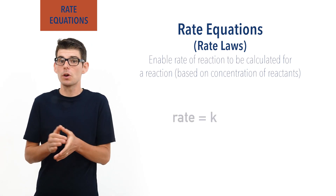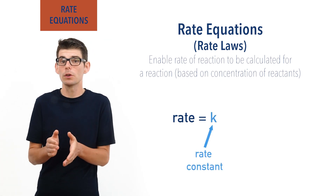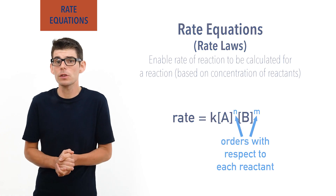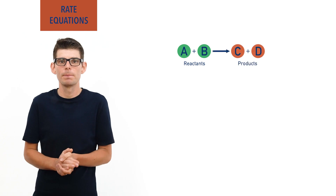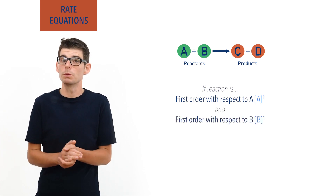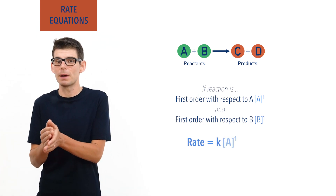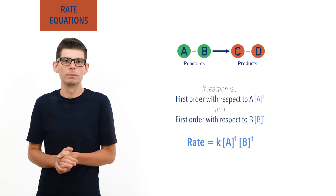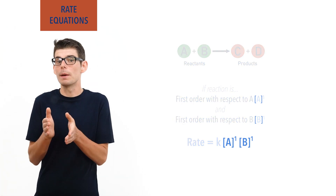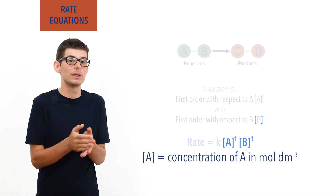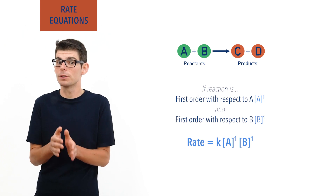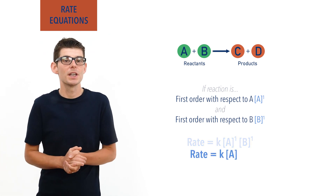The rate of a reaction equals a constant called the rate constant K, multiplied by the concentrations of reactants in the reaction raised to the power of their order in the reaction. For example, imagine a reaction A and B forming products C and D. If the reaction is first order with respect to A and first order with respect to B, then the rate equation would be: rate equals rate constant K multiplied by concentration of A to the power of 1, multiplied by concentration of B to the power of 1. Remember, in chemistry we represent concentration using square brackets — so square brackets A means concentration of A in moles per decimetre cubed. Anything raised to the power of 1 just equals itself, meaning we can simplify this equation down to: rate equals rate constant K multiplied by concentration of A multiplied by concentration of B.